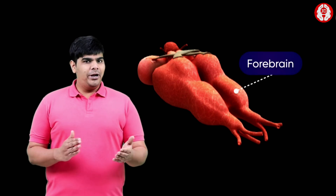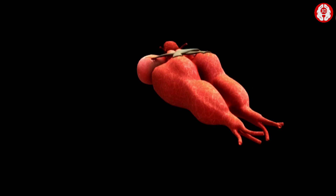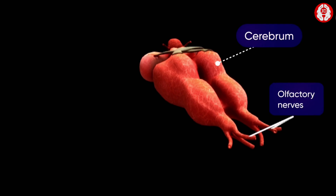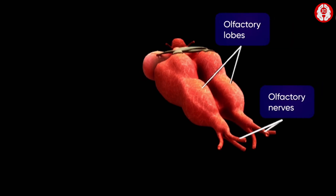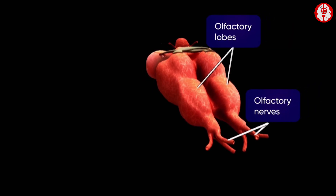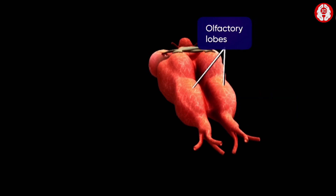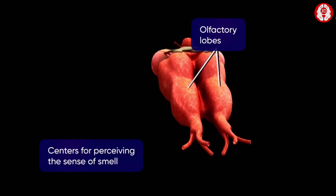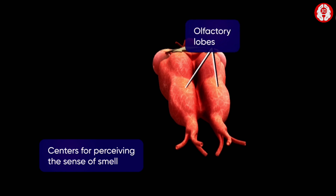The brain of a frog is divided into three regions: forebrain, midbrain, and hindbrain. The forebrain consists of cerebrum, olfactory lobes, and diencephalon. A pair of olfactory nerves is seen passing on the ventral surface of the olfactory lobes. The olfactory lobes possess the centers for perceiving the sense of smell.